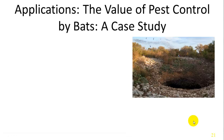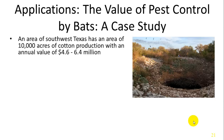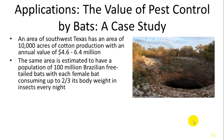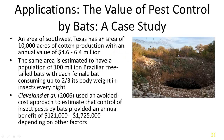One last application: the value of pest control by bats. An area in Southwest Texas has 10,000 acres of cotton production with an annual value of $4.6 to $6.4 million. The same area has large populations of Brazilian free-tailed bats roosting in caves. Each bat eats about two-thirds of its body weight in insects per day. Cleveland estimated that bats provide an annual benefit of $121,000 to $1,725,000 to that area in pest control — a predator-prey dynamic with direct economic benefit to agriculture.